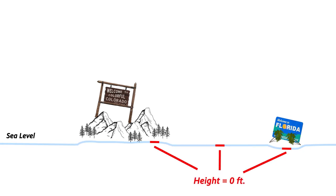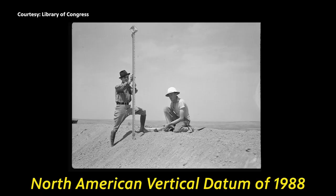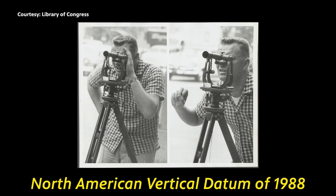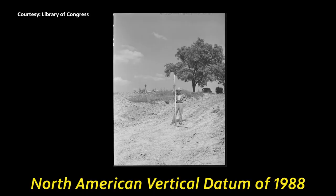The old height system — which is still the current height system — is called the North American Vertical Datum of 1988. Crews of people with rulers and telescopes walked inland, keeping track of the heights as they went, and literally it took something like 50, 60 years. That's how things have stood since the late 80s. Coincidentally, in the 1980s GPS was invented — but GPS doesn't know about gravity.